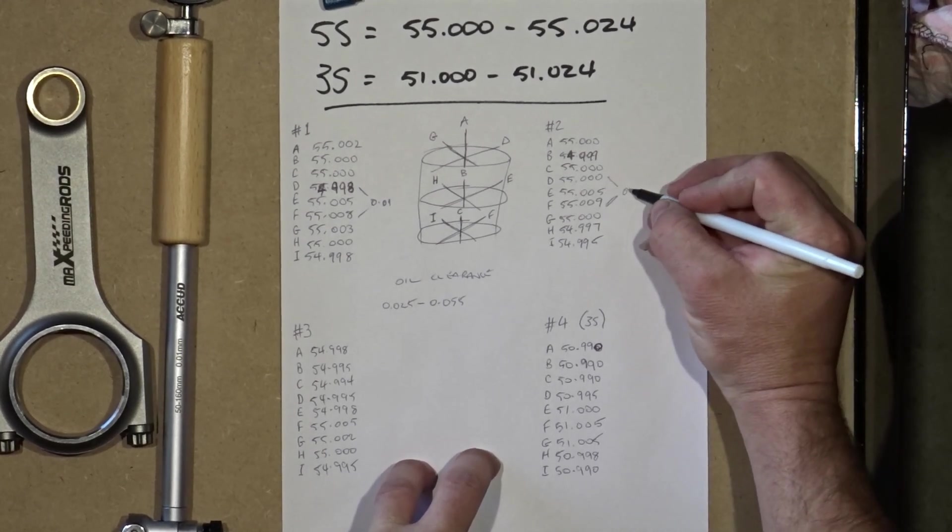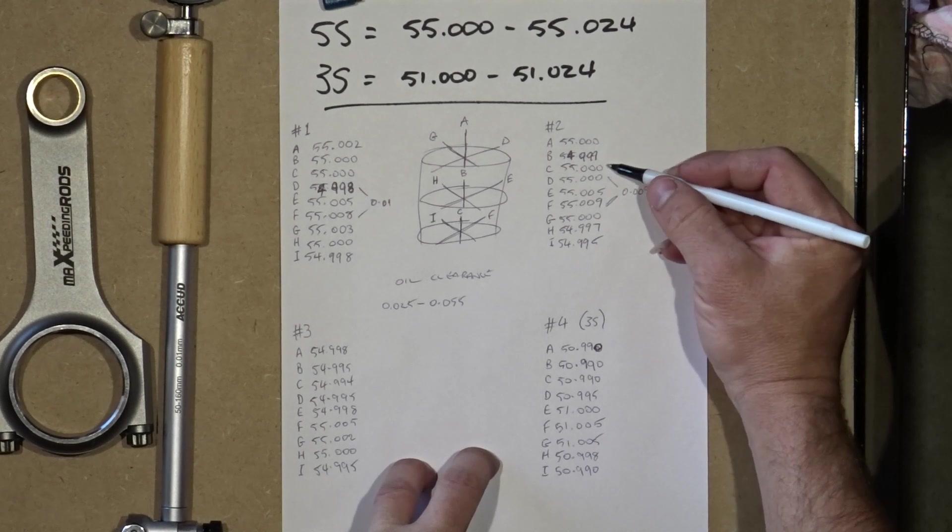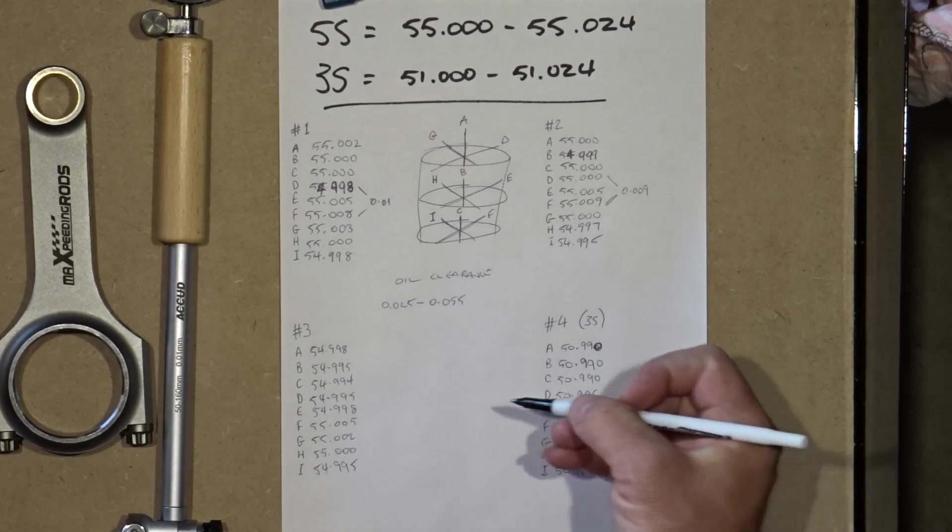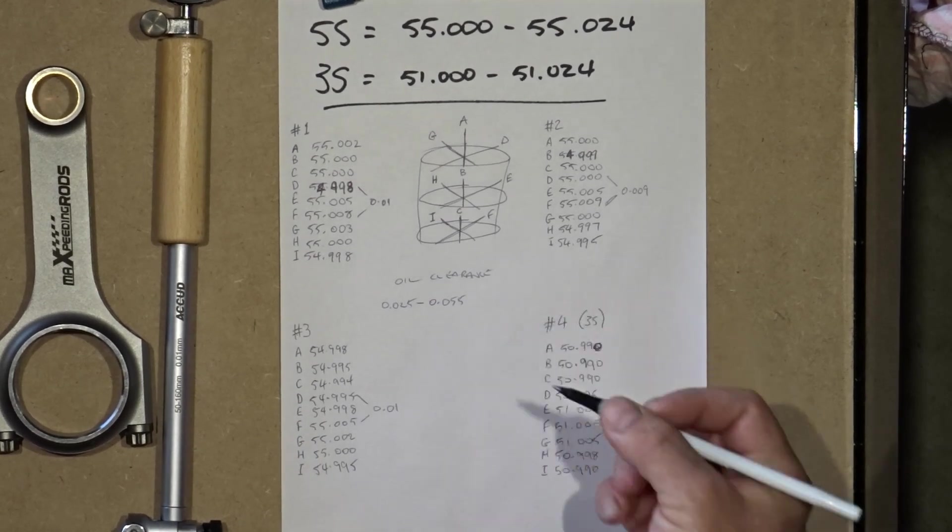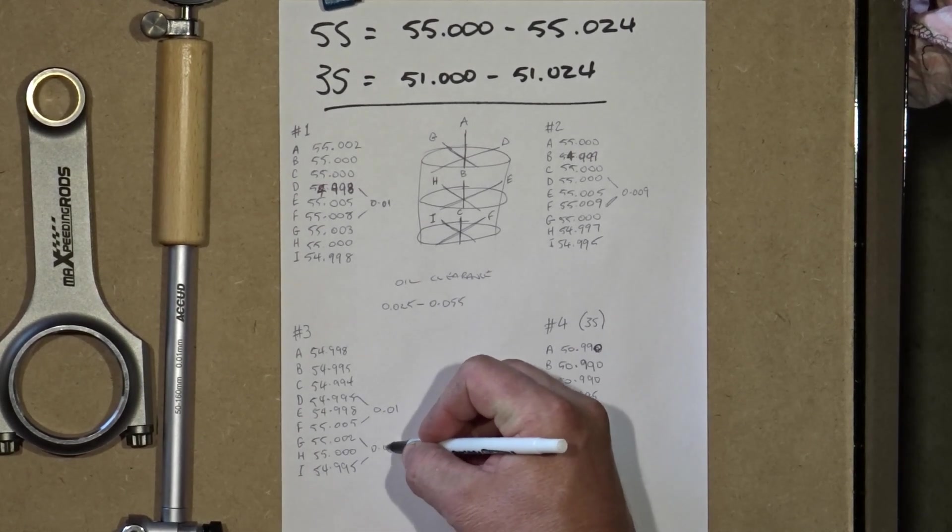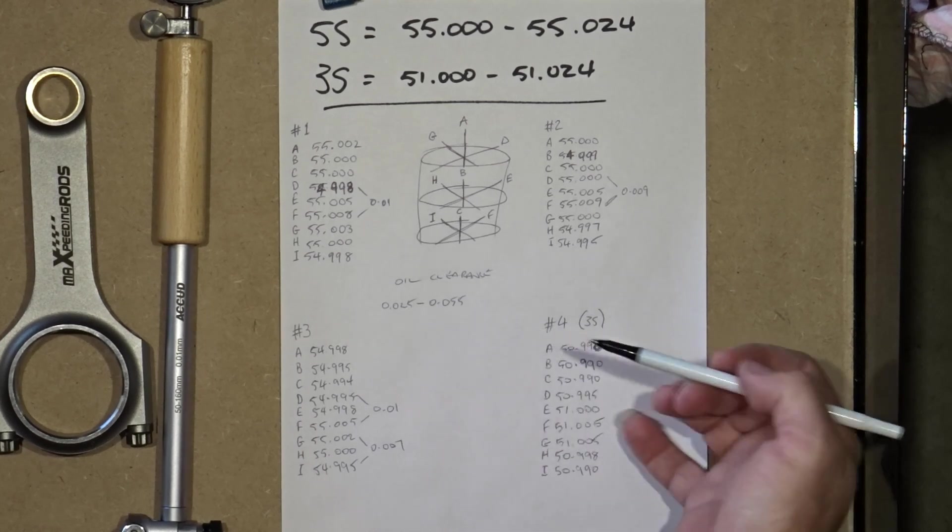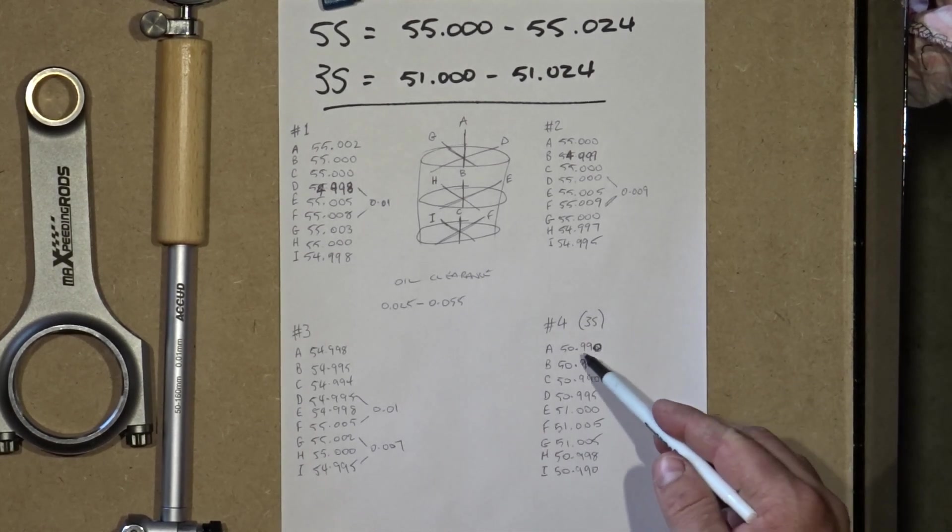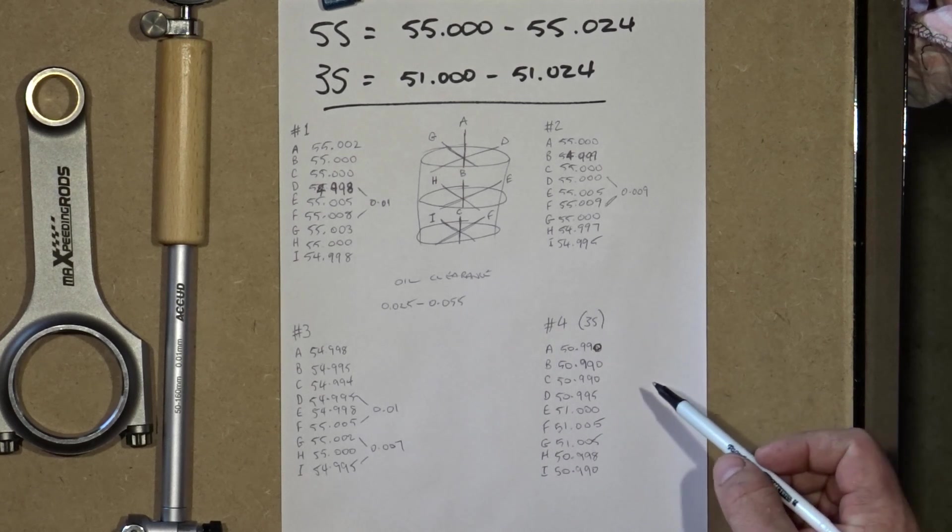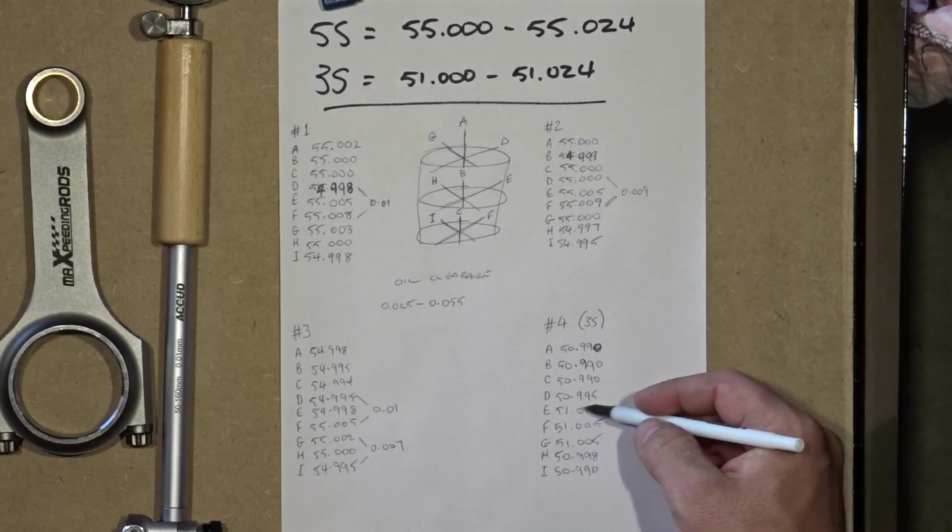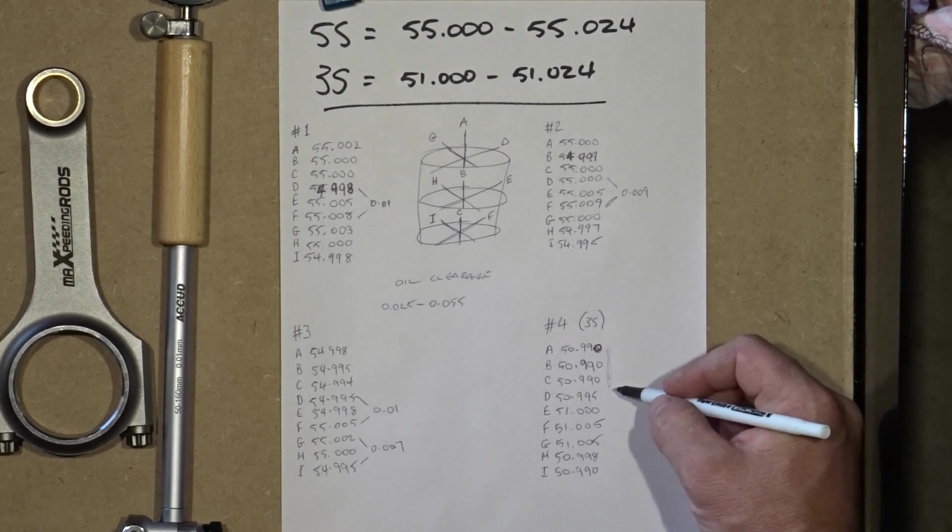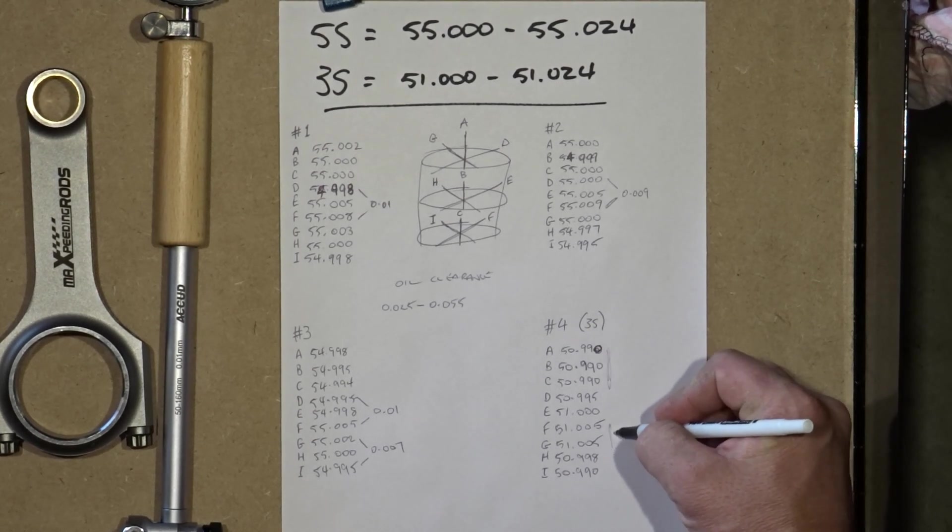Over here on number 2, which is all over the shop again, we've got 55 flat and 55.009, which is again almost 0.01 millimeters. Number 3, just as bad, also all over the shop, and several measurements are undersized. Number 4 is my 3S rod because I picked up a bunch without looking. Most of these are undersized, which is completely out of spec. And here we've got a difference of 0.015, which is the worst one so far. All in all, the big ends of these rods are pretty terrible.